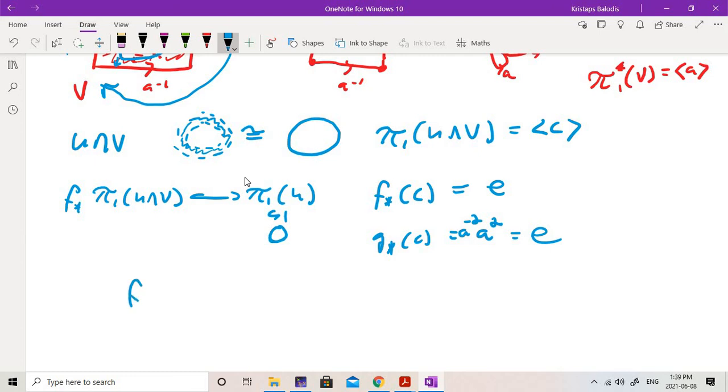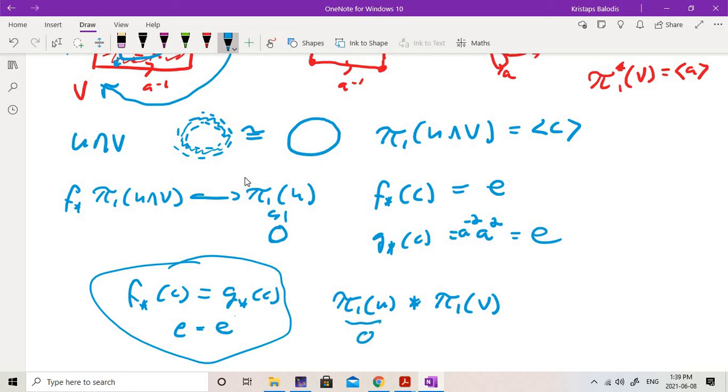And so what does our amalgamating relation tell us? Well, it just says that the push forward of C and the push forward under F and the push forward of C under G have to be equal. Well, that just says that the identity has to be equal to the identity. So ultimately then, it just becomes there's really no information coming from the amalgamated part of the amalgamated product. So our group is really just the free product of the fundamental groups here, but this one is trivial. And so this really just becomes π₁ of V, and as we saw, that was isomorphic to ℤ.